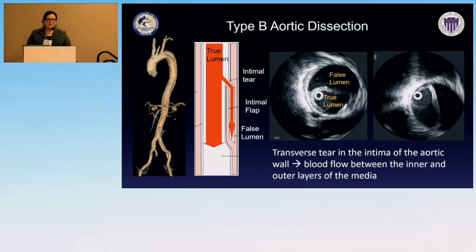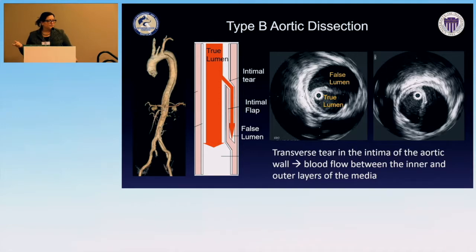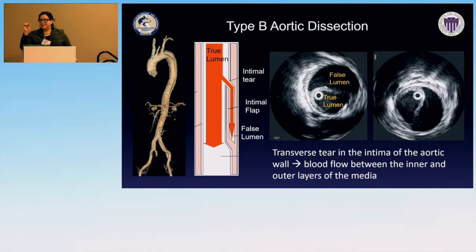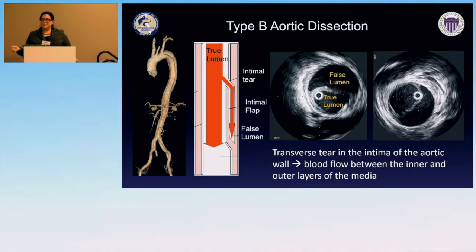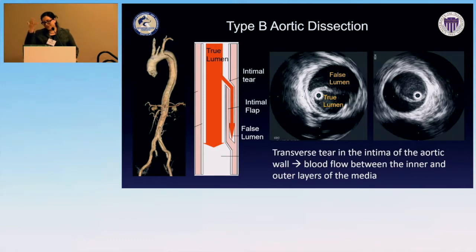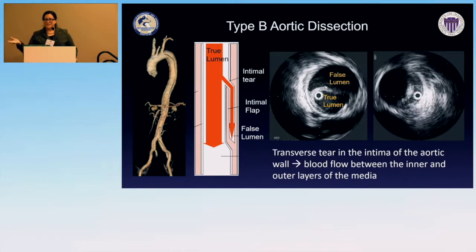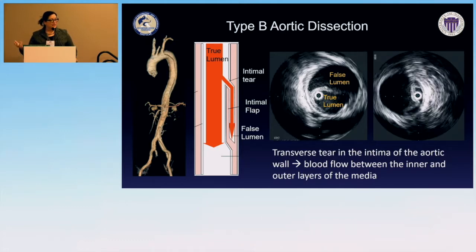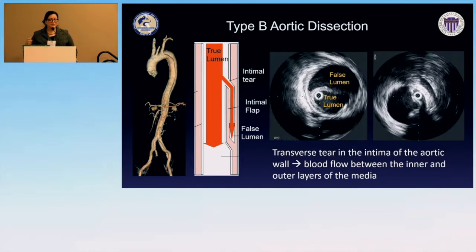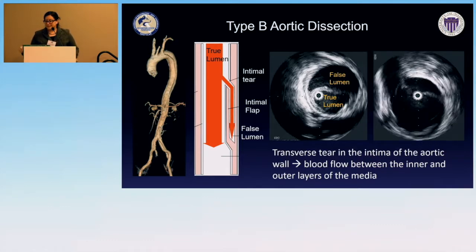It's basically a tear in the wall of the artery. The IVUS lets you see the flap moving in real time, mark the location of entry tears, confirm wires are in the right place, and take measurements. It's a very nice tool we use all the time when we do aortic dissection cases.